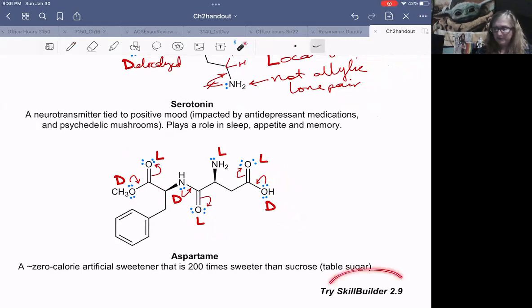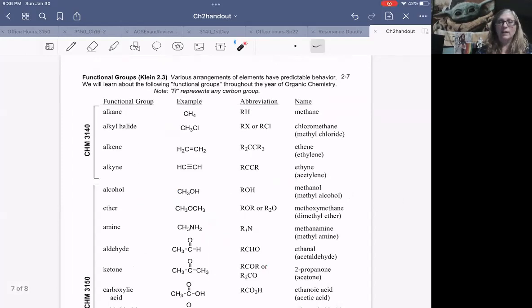Skill builder 2.9 is all about identifying localized and delocalized lone pairs.